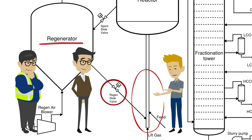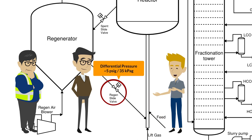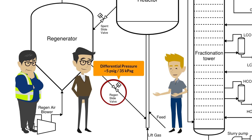The regen slide valve also has override controls on differential pressure. It is important to maintain around 5 psig, or 35 kPaG, of differential pressure across the valve to prevent misdirecting hydrocarbons from the reactor standpipe into the regenerator.